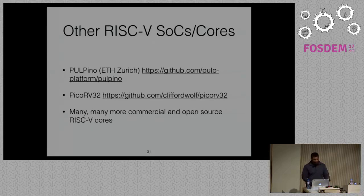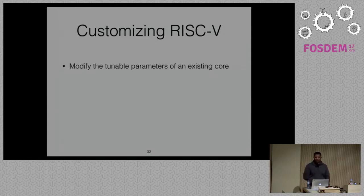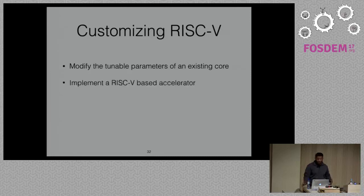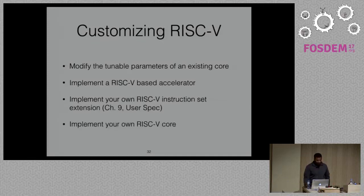If you want to customize RISC-V, the easiest way is to modify the tunable parameters of an existing core — grab the Rocket Chip and play with parameters like disabling the floating-point unit or changing the cache hierarchy. You can also implement your own RISC-V accelerator or your own instruction set extension — Chapter 9 of the user specification has information on this, and if you think it might be useful to others, you can submit it for standardization. And if you have a lot of time on your hands, you can implement your own RISC-V core.